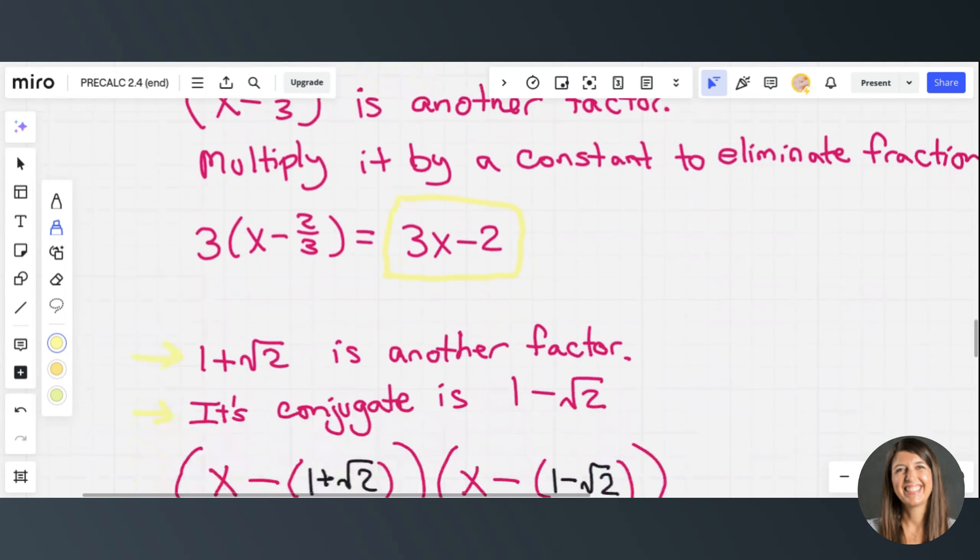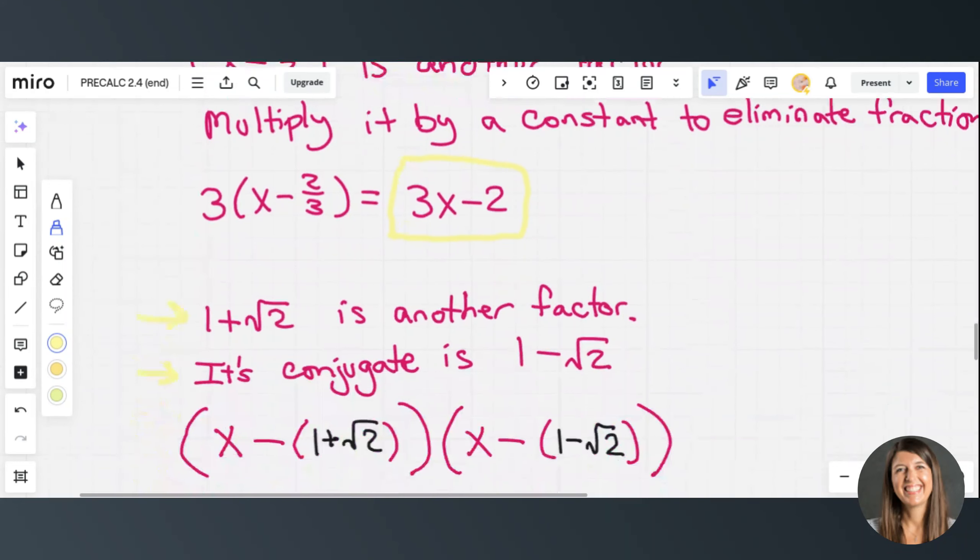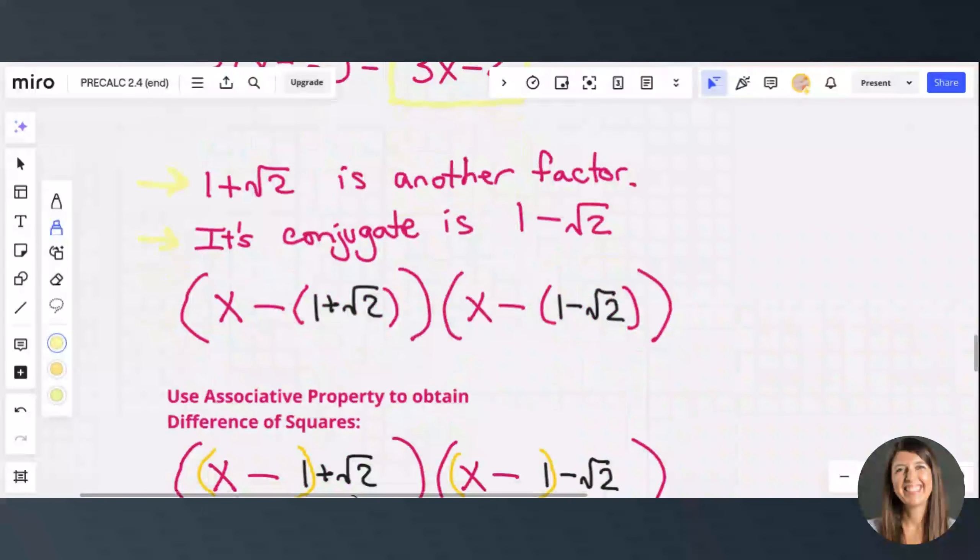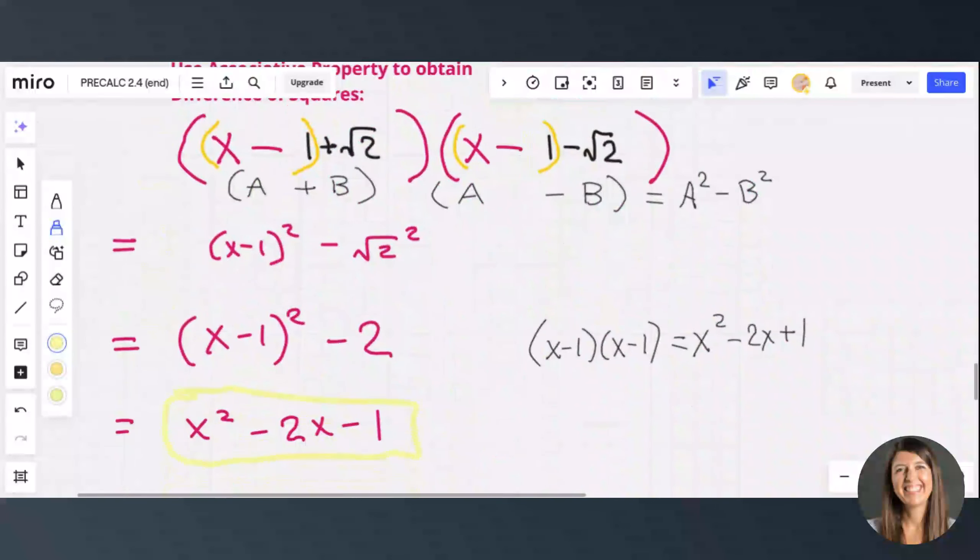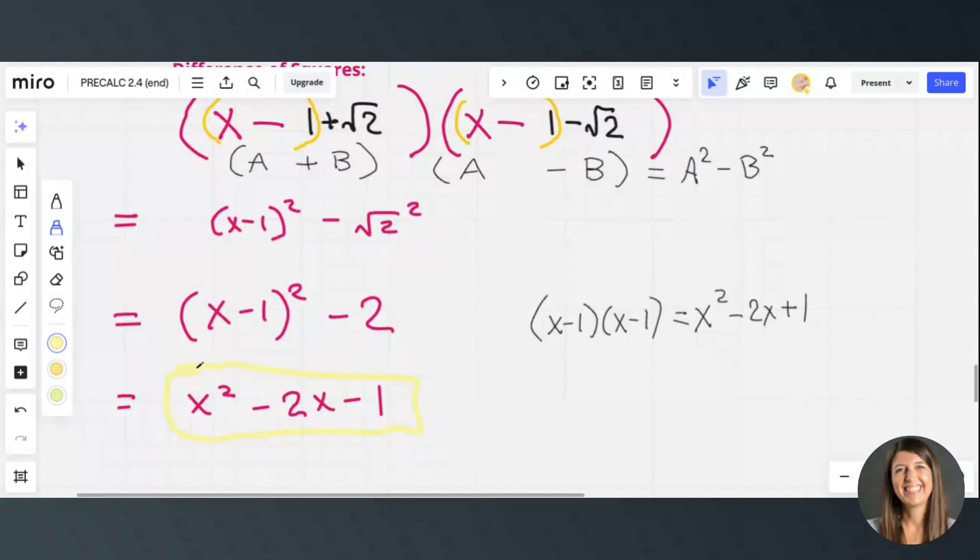Then, because 1 plus root 2 was a factor, we knew its conjugate was a factor. So we used the associative property and the difference of squares, and we FOILed everything, and we got this third factor.